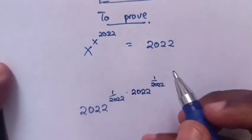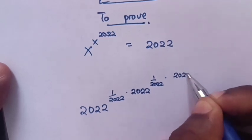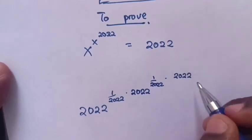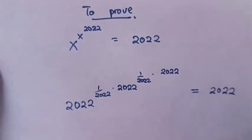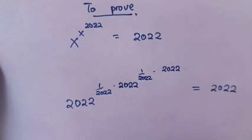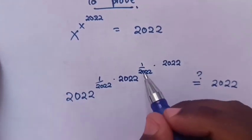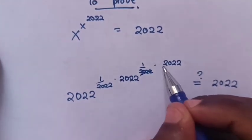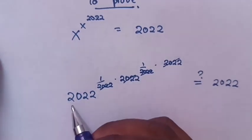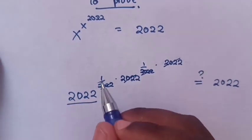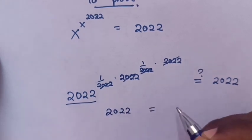This equals 2022 — we verify it is true. From the multiplication of powers, they simplify by canceling each other, so 2022 power 1 is the same as 2022. So this is confirmed true.